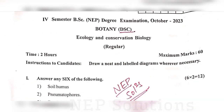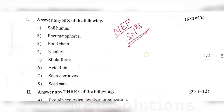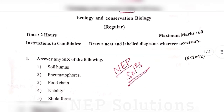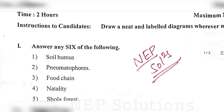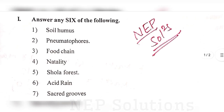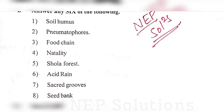First we will see the short answer questions. They will give 8 questions and we need to write answers for 6 questions. We need to define these terms: soil humus, nematophores, wood chine, natality, shoreline forest, acid rain, sacred grooves, and seed bank. These are very easy questions and you can easily get 12 marks here.